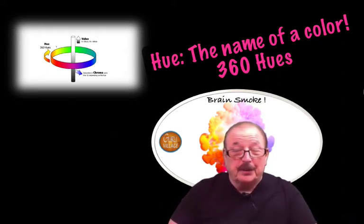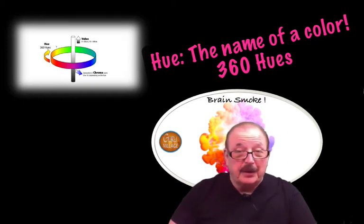So there are 360 degrees in a circle. Therefore, there are 360 different hues that can be created on the color wheel. Actually, the color wheel should be called a sphere, not a wheel.